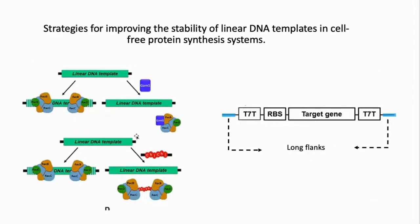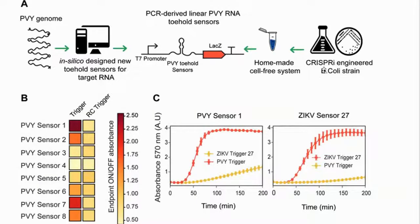Then he went further and said building a plasmid is always difficult and expensive because you have to spend time. We wanted to use linear DNA instead. So he developed a CRISPR-engineered strain to remove all the nucleases that break the DNA, and testing a sensor for the potato virus, he managed to do it.